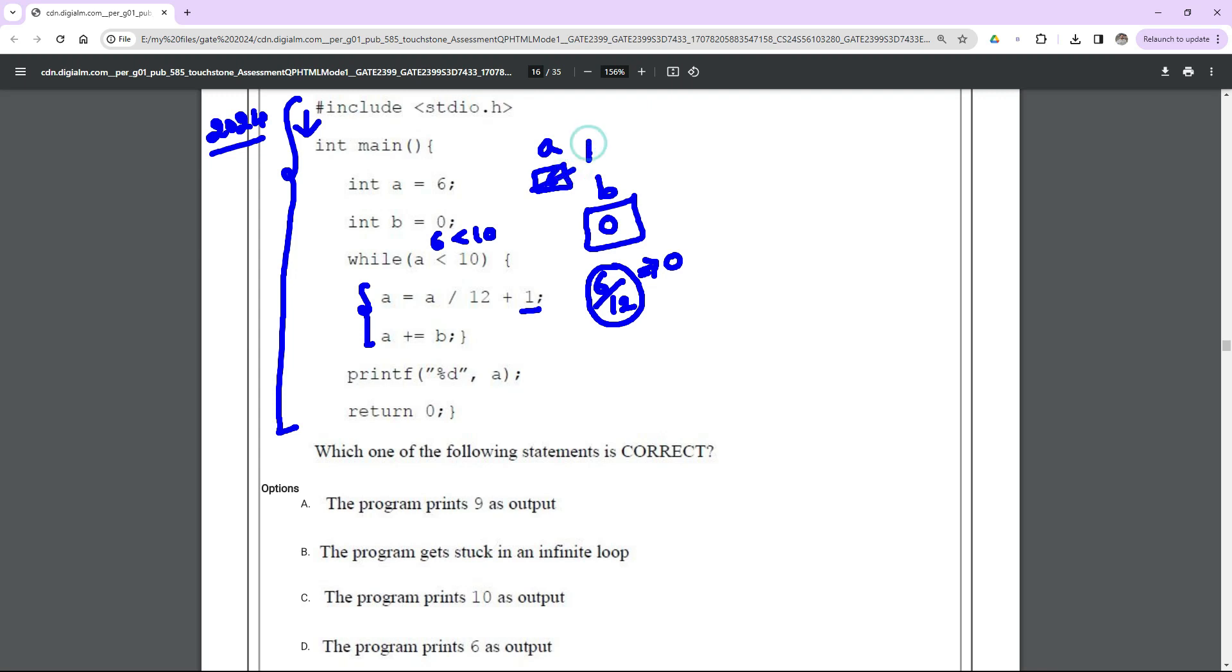Now a plus equal to b, which means I can write as a equal to a plus b. What is the value of a? 1. B value is 0, so a equal to a plus b means 1 plus 0 is 1, so a will be updated by 1. Now as it is a while loop, until the condition fails it is going to be iterated continuously.